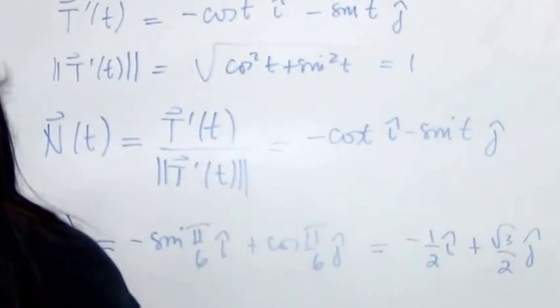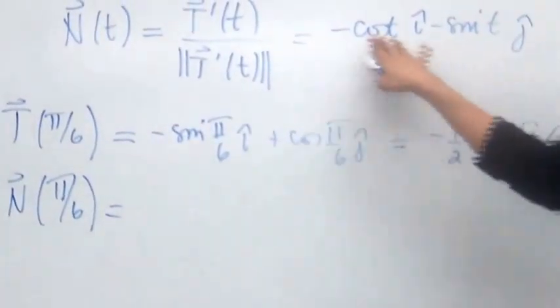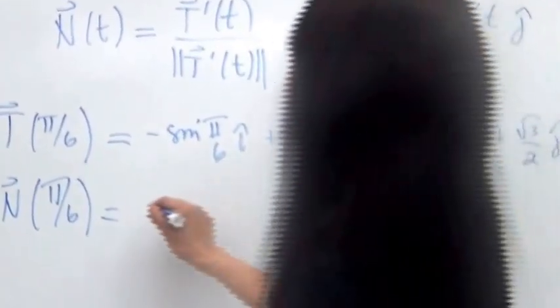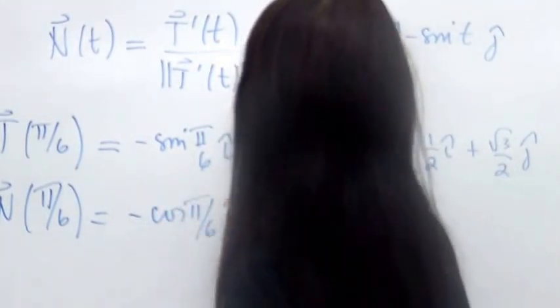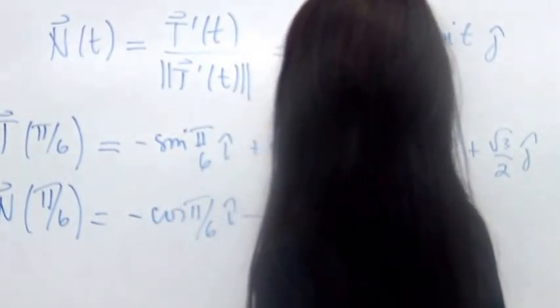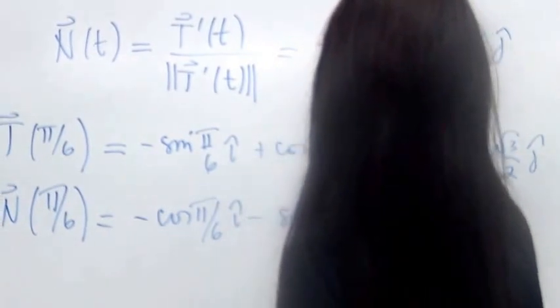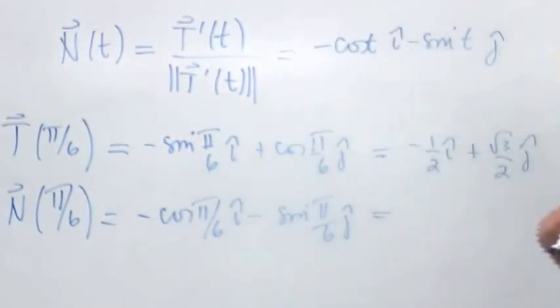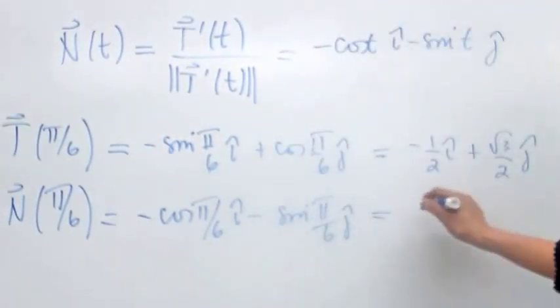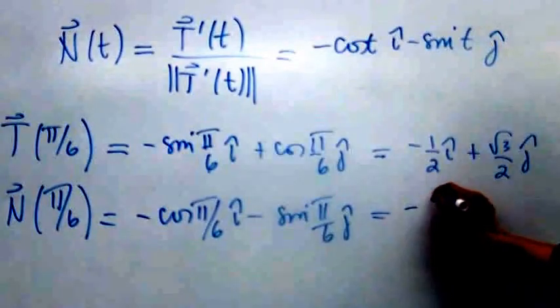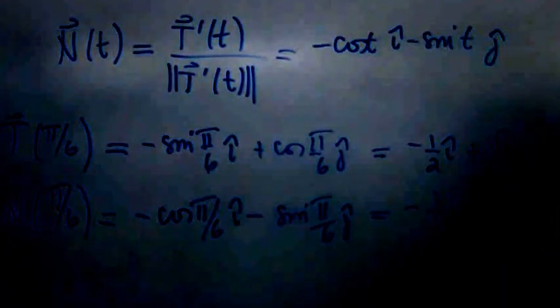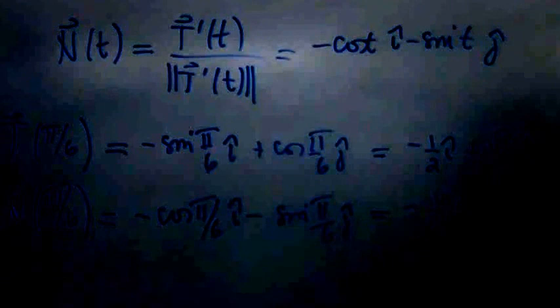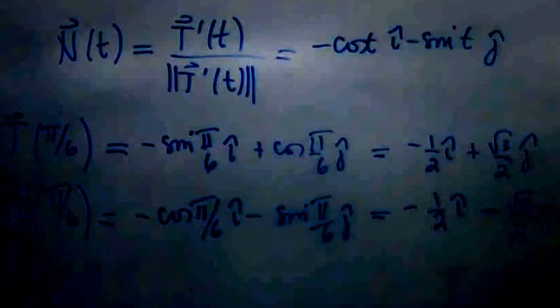N of pi over 6 is negative cosine(pi/6) i minus sine(pi/6) j. So that's going to be negative (√3/2) i minus (1/2) j.